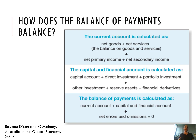In terms of the capital and financial account, we need the capital account balance, but we also need all the items from the financial account. So we need to add up direct investment (FDI), portfolio investment, other investment, reserve assets, and financial derivatives. Then we'll get the balance on the capital and financial account.